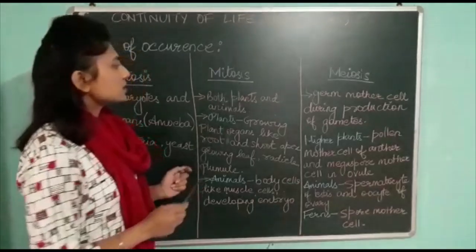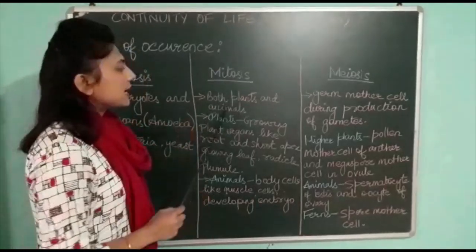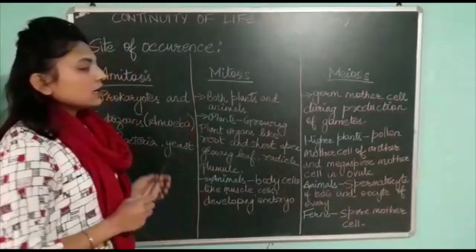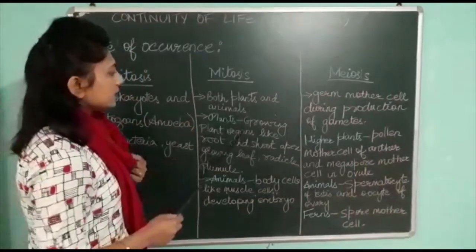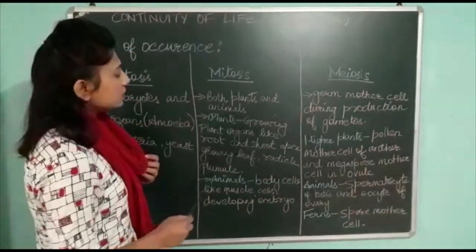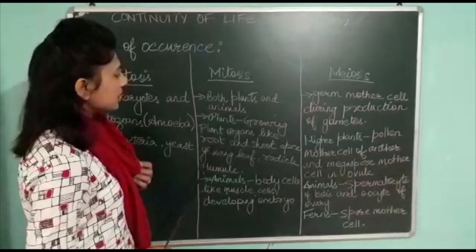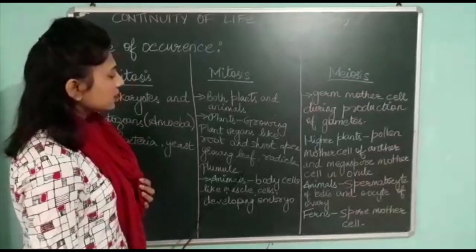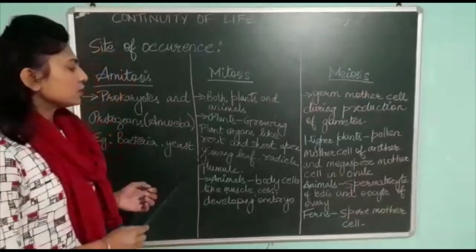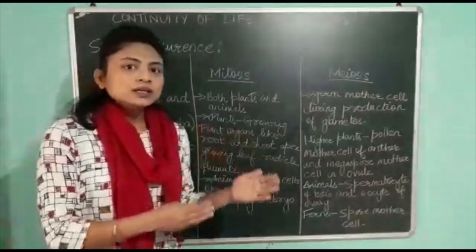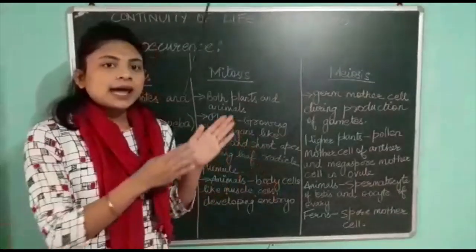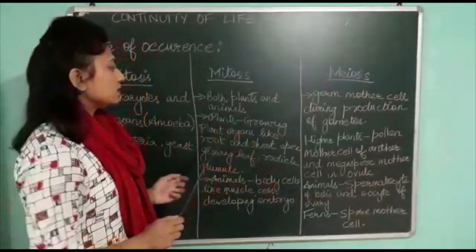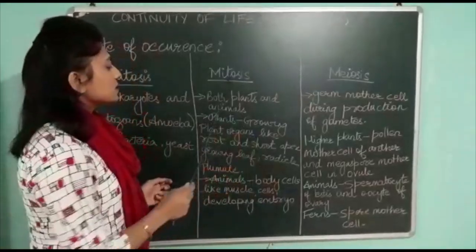Mitosis occurs in both plants and animals. In plants, it occurs in the growing plant organs like root and shoot apex, growing leaf, radicle, and plumule. This is the actively growing region of the plant, which is what we call the site of mitosis cell division.